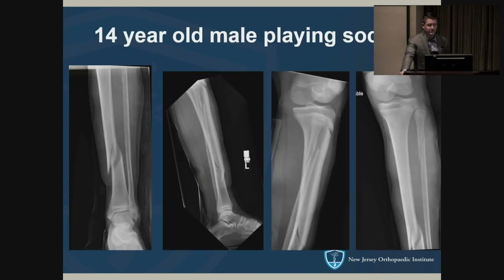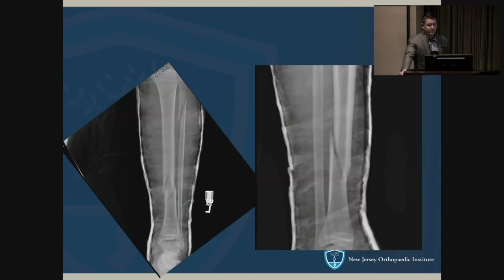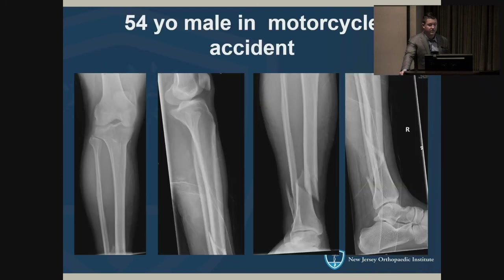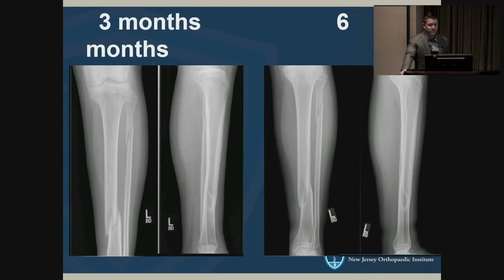Case one: a 14-year-old high school soccer player. He was casted, then converted to a brace. At three months he was weight-bearing, and at six months he had fully healed.